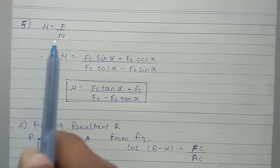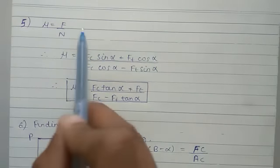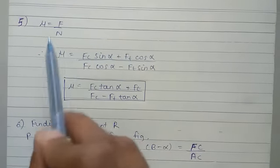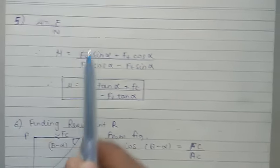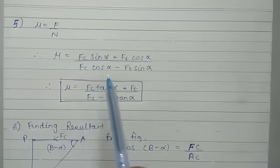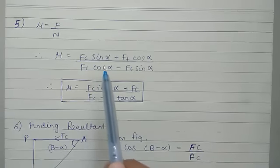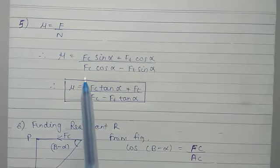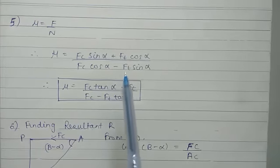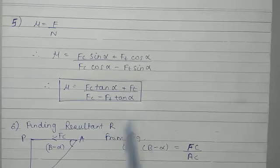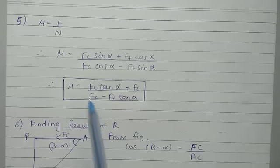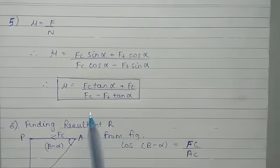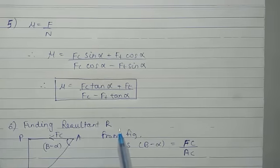Next, finding coefficient of friction. Mu is equal to F upon N. By substituting the values of F and N, we get mu equal to (Fc sin alpha plus Ft cos alpha) upon (Fc cos alpha minus Ft sin alpha). On solving, we get mu equal to (Fc tan alpha plus Ft) upon (Fc minus Ft tan alpha).